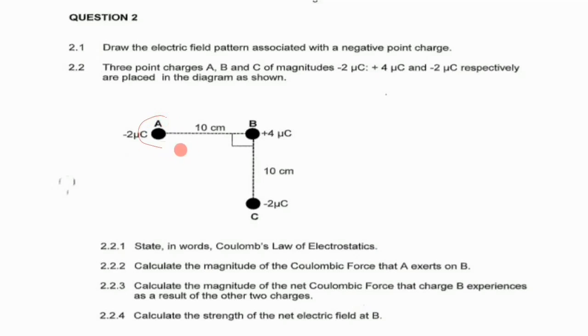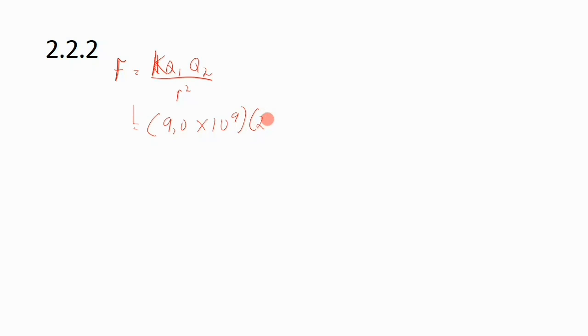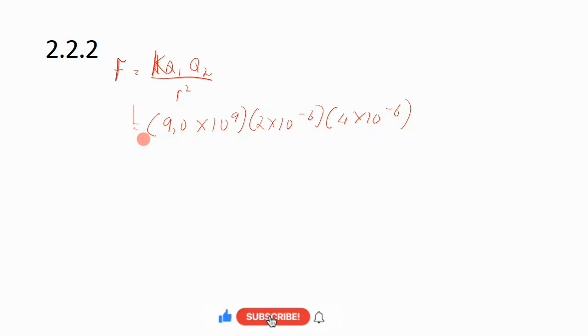Question 2.2.2 says: calculate the magnitude of the Coulombic force that A exerts on B. We are focused on the interaction between A and B. The formula to calculate the electrostatic force is F = kq1q2/r². The constant k is 9.0 × 10⁹. Charge q1, the charge on A, is 2 × 10⁻⁶ C, and q2 is 4 × 10⁻⁶ C.